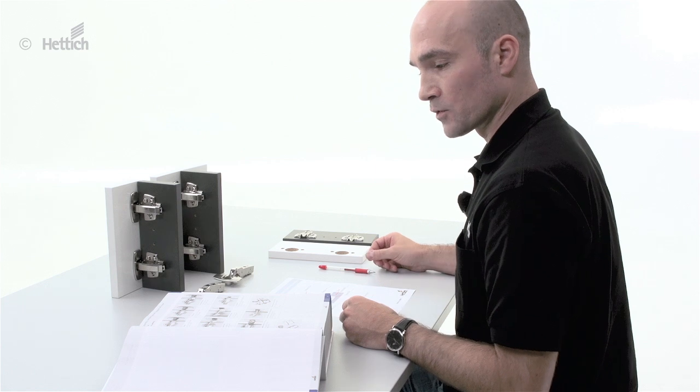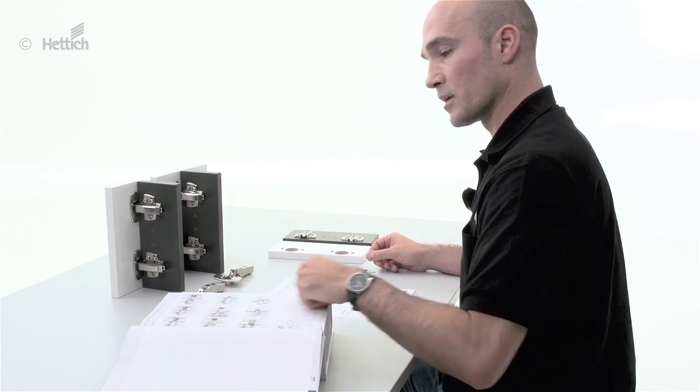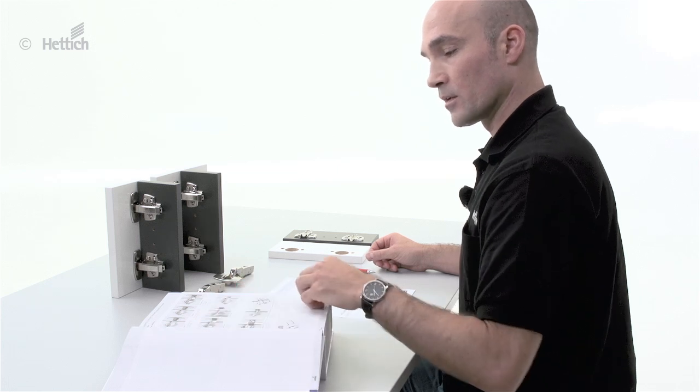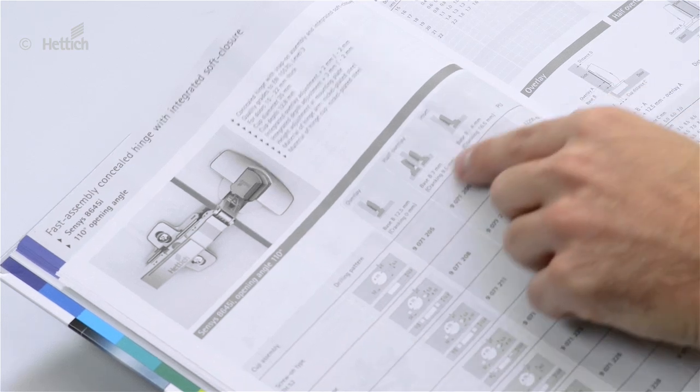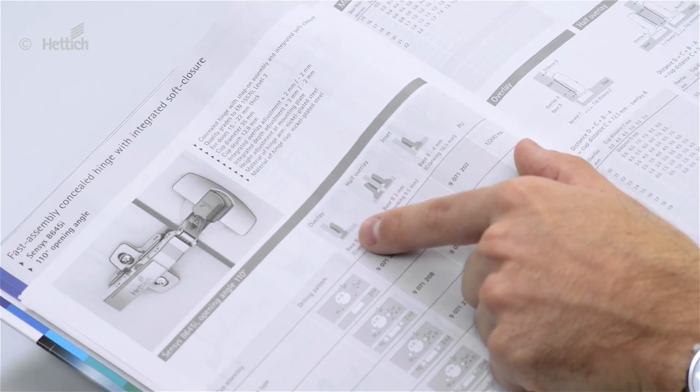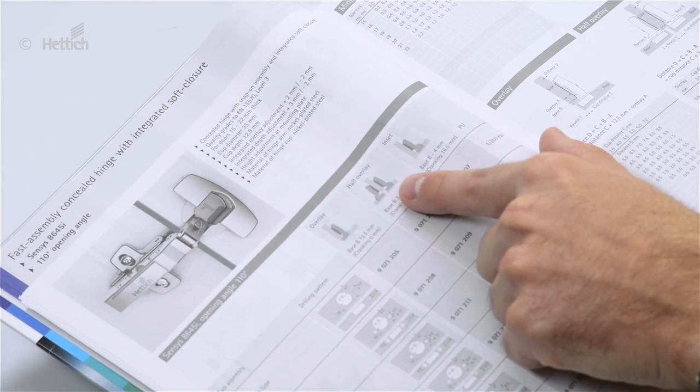In this step we want to demonstrate how to calculate a standard full overlay application. Therefore we go to the catalog page and we see there are two different types of overlay applications: full overlay and half overlay application.